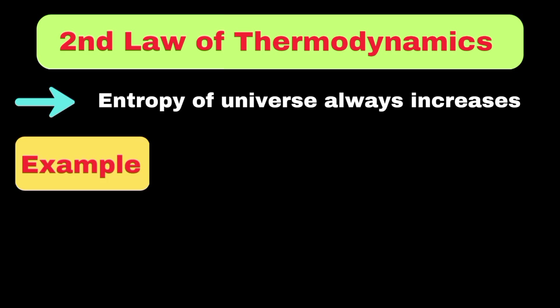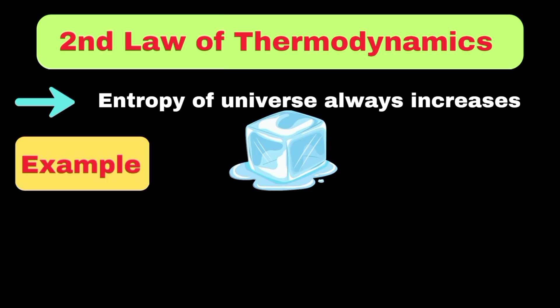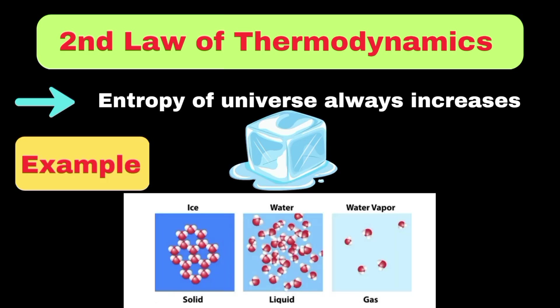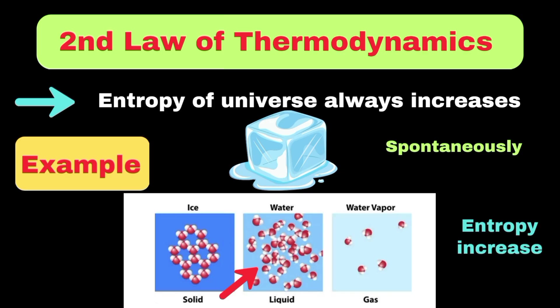Let's take the example of an ice cube melting at room temperature. When the ice cube melts, the ordered arrangement of water molecules in the solid state becomes more disordered in the liquid state. This process happens spontaneously because it increases the overall entropy.